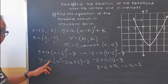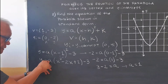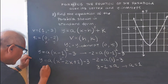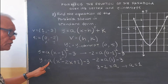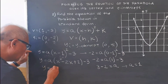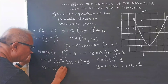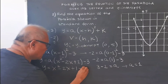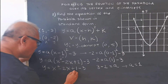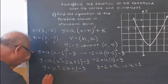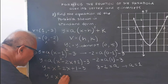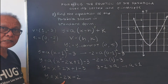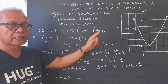Since a is 1, we have y equals 1 times (x squared minus 2x plus 1) minus 3. We don't need to write the 1, so this becomes y equals x squared minus 2x plus 1 minus 3. Combining like terms: y equals x squared minus 2x minus 2. And this is our equation in the standard form of that parabolic curve.